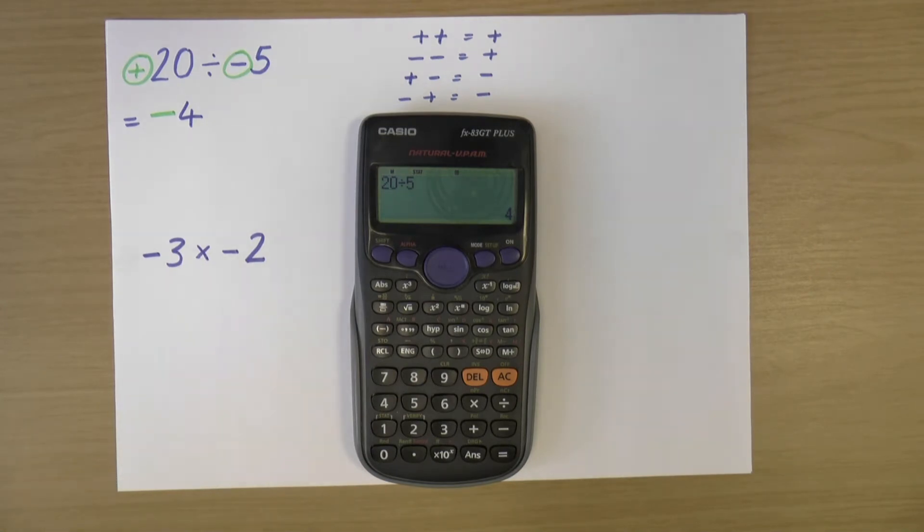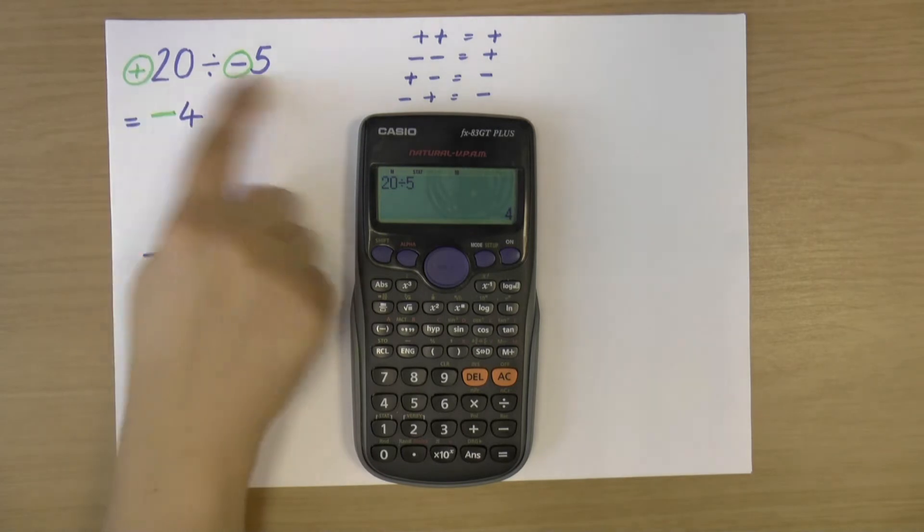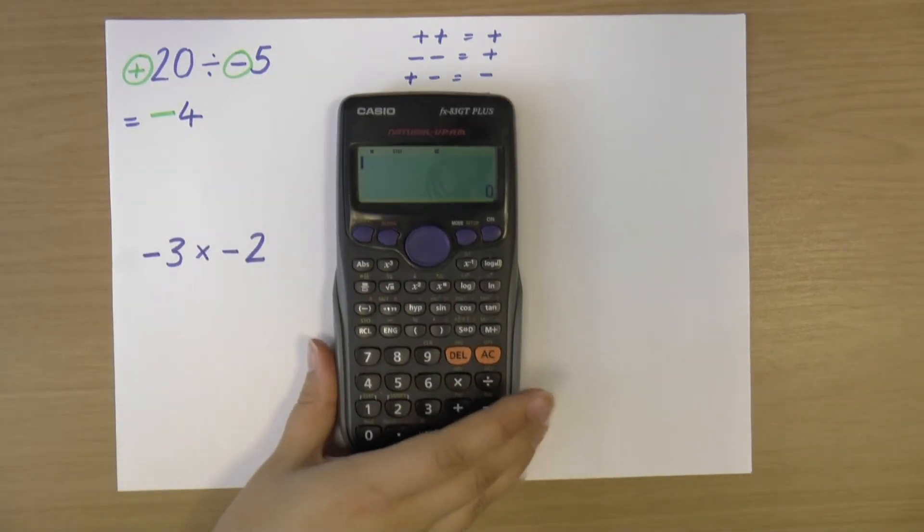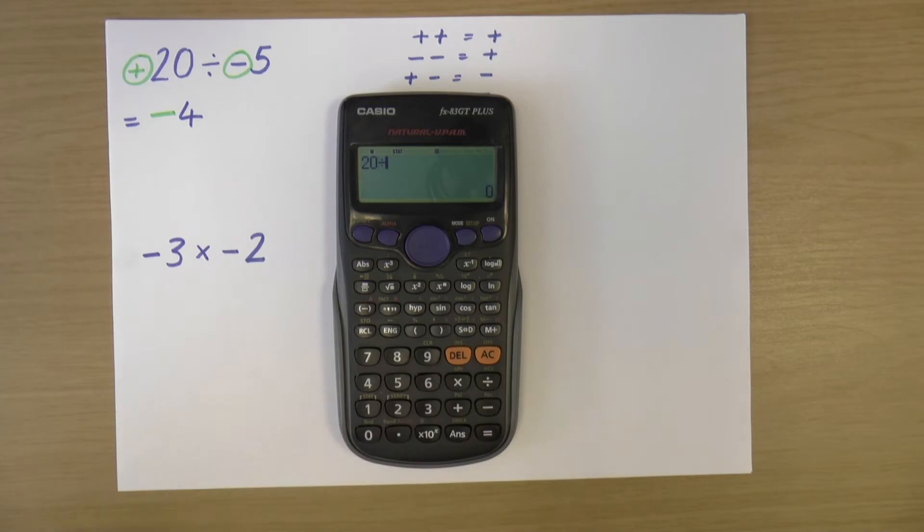Now, also, you can just put this into a calculator. So if I put in 20 divided by minus five. And remember, when I've got negative numbers, I use this symbol here. 20 divided by minus five, then that should give me negative four. And it does. Good.